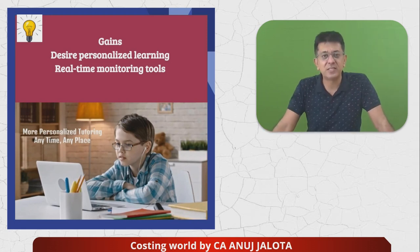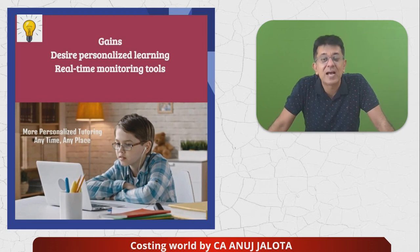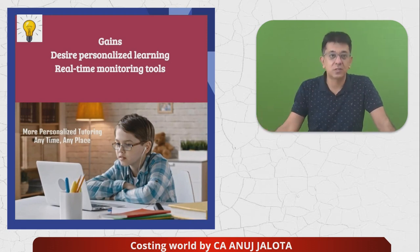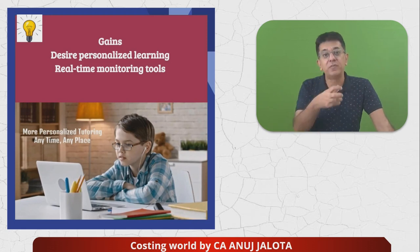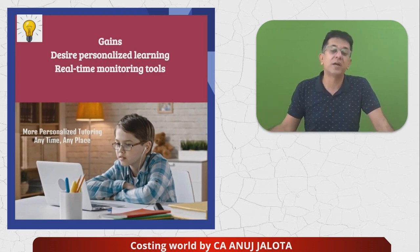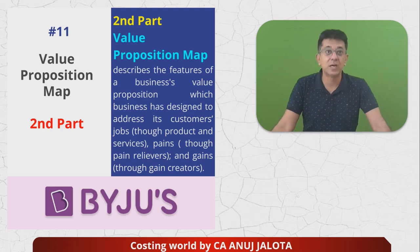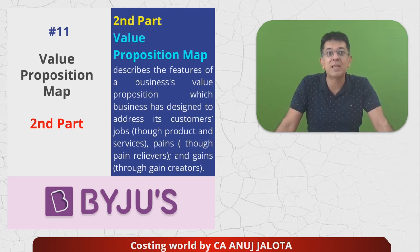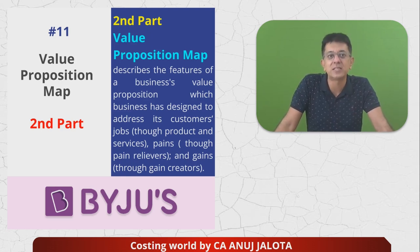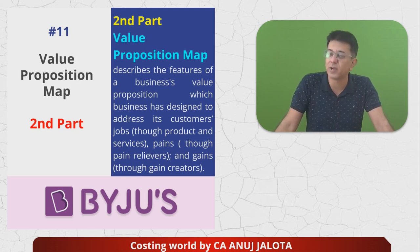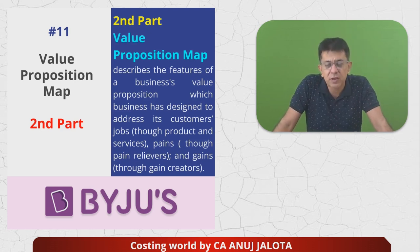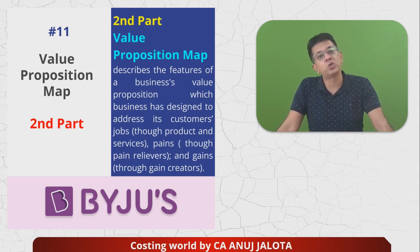Now on the left-hand side, it is our turn as a business to address those things — how will we relieve the pains, how will we give the gains? We do that by offering our products and services. The value proposition map describes the features of a business's value proposition, which the business has designed to address its customers through pains and gains, and obviously through the products and services — the jobs that we are going to be offering to them.